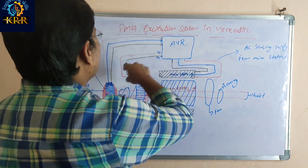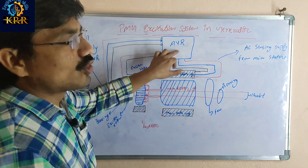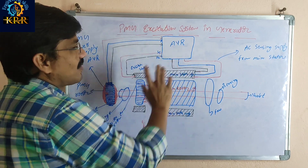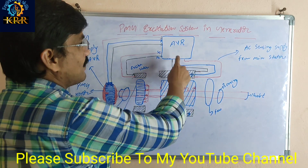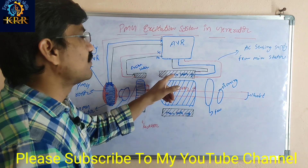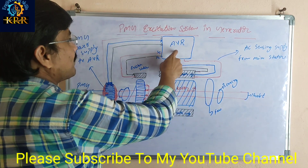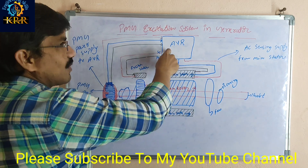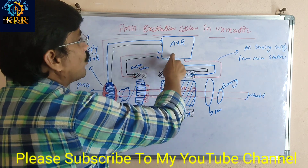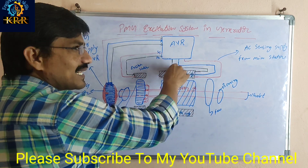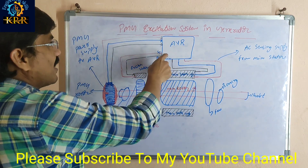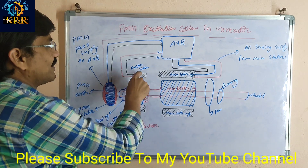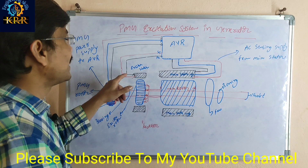The PMG generator supplies power to the Automatic Voltage Regulator. The AVR receives the voltage sensing from the main stator — how much voltage is coming. If low voltage is coming, it applies over-excitation; if high voltage is coming, it applies under-excitation. Accordingly, it provides power to the exciter stator.